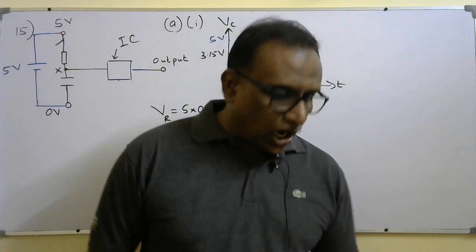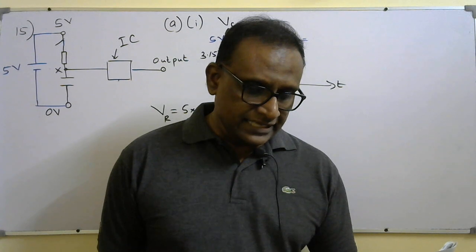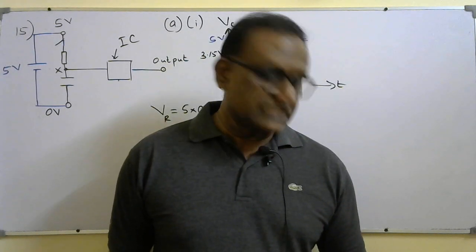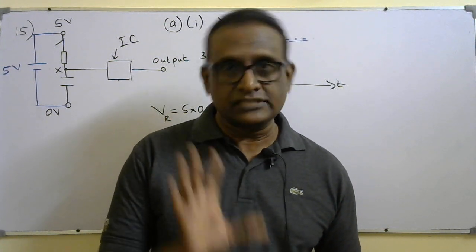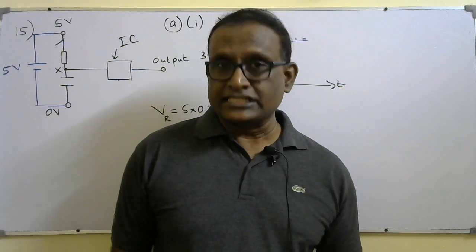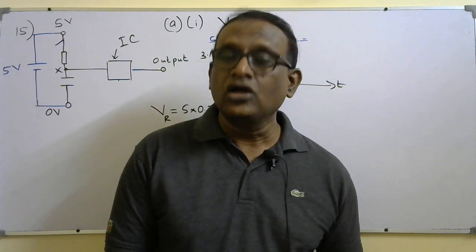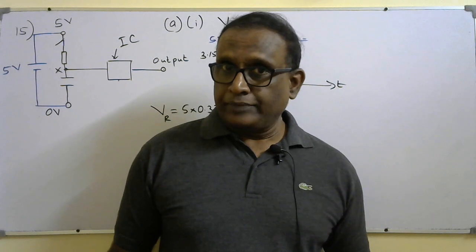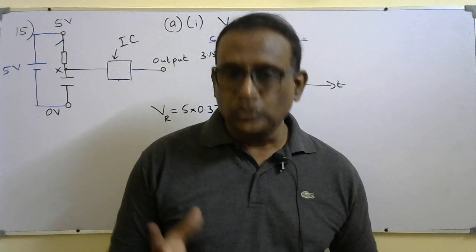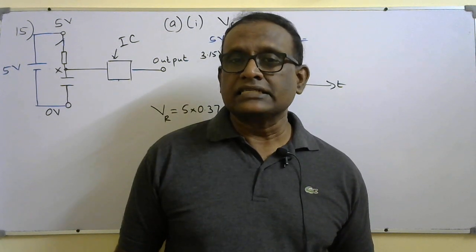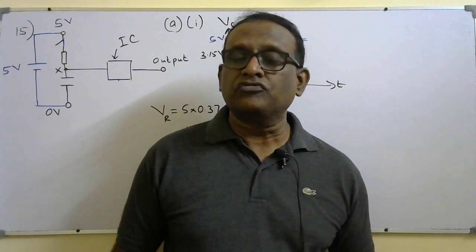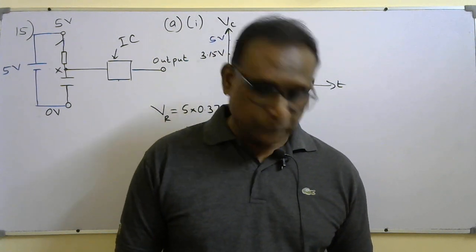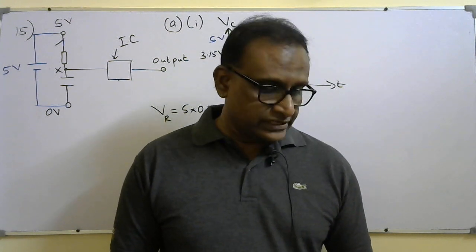Part A second part: explain how Vr across the resistor varies with time. Initially Vc = 0 and Vr = 5 V. The current in the charging circuit decreases exponentially, so the voltage across the resistor also decreases exponentially with time.